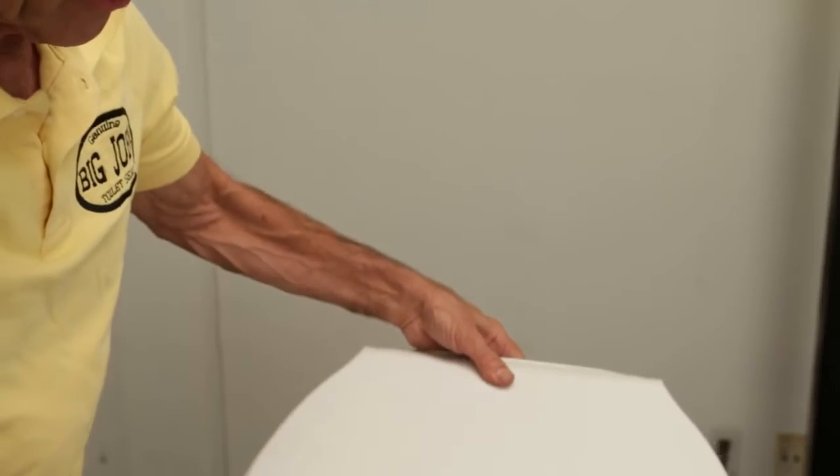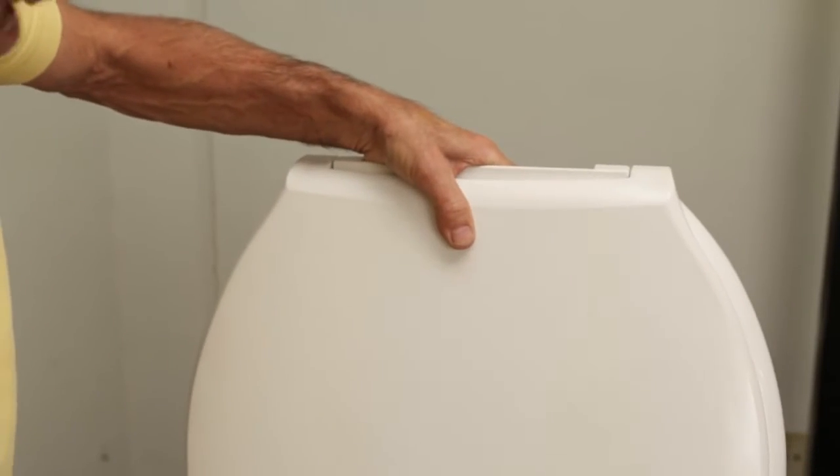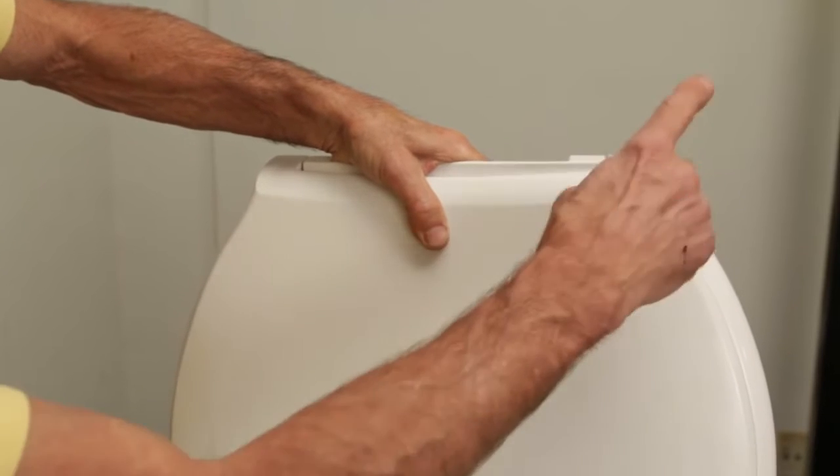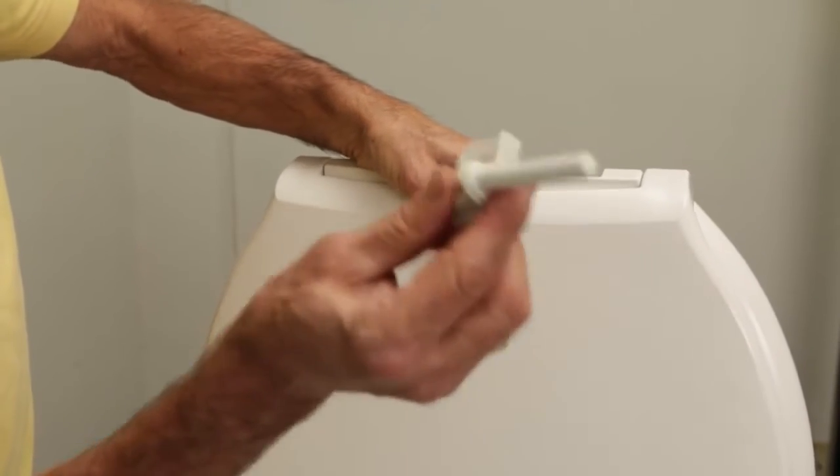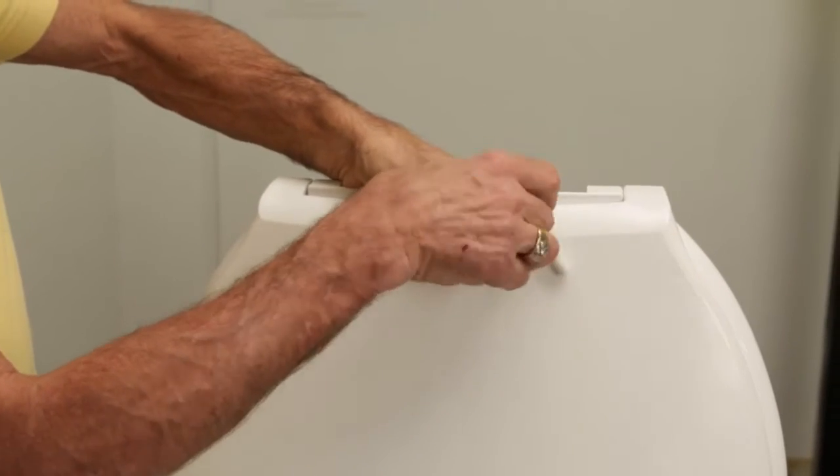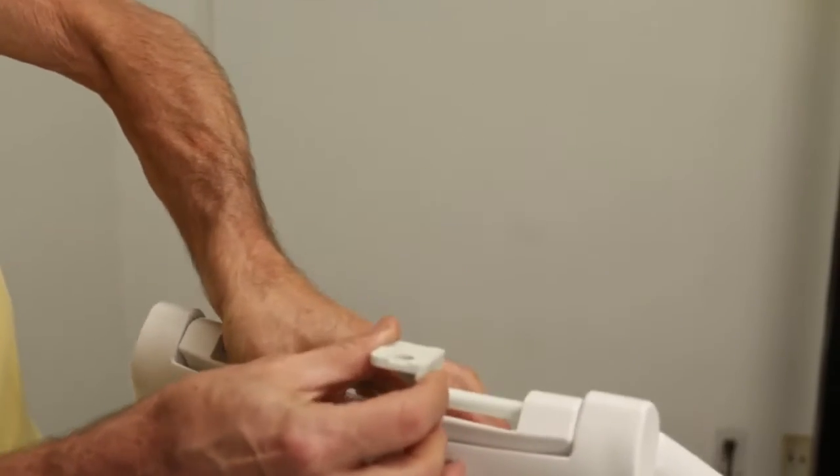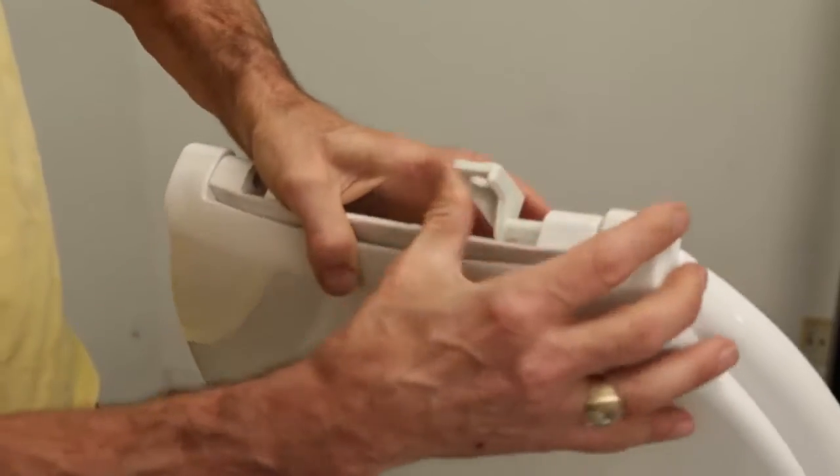Take the Big John toilet seat. Now the right side is as you're looking at the toilet. That would be the right and the left. Take the right hinge marked right and put it through the seat into the lid.